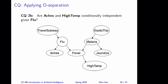Question 2b. We are still considering x and high temperature, except that now we observe the value of flu. So given flu, are x and high temperature conditionally independent or not? Think about this yourself, and then keep watching for the answer. The correct answer is yes — x and high temperature are conditionally independent given flu.